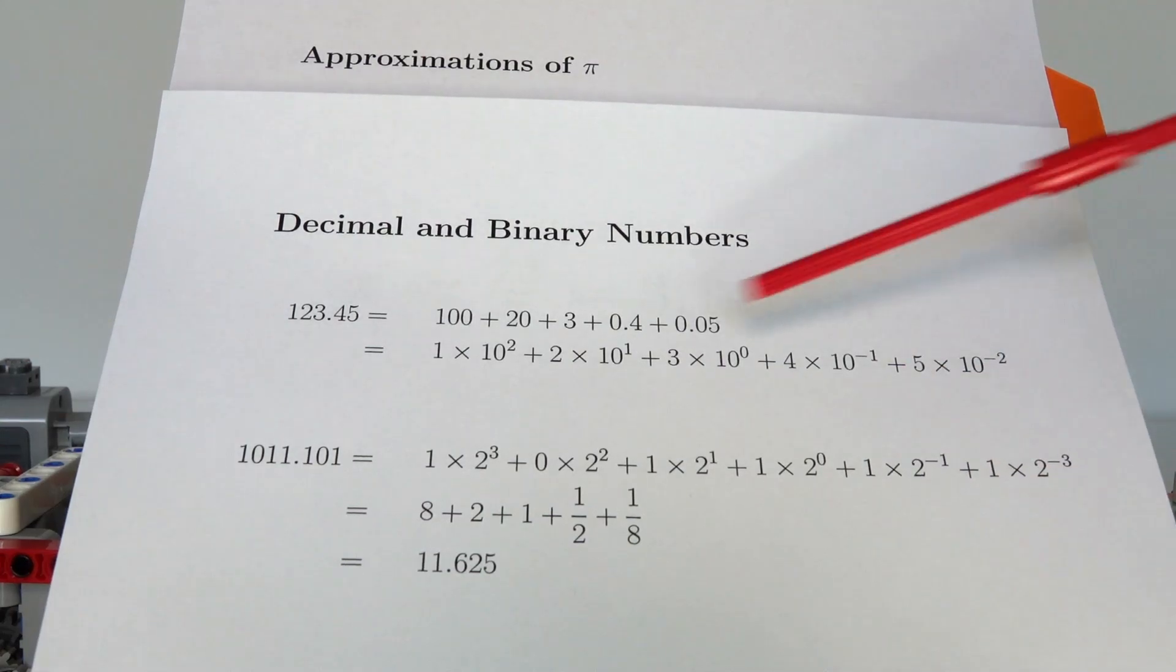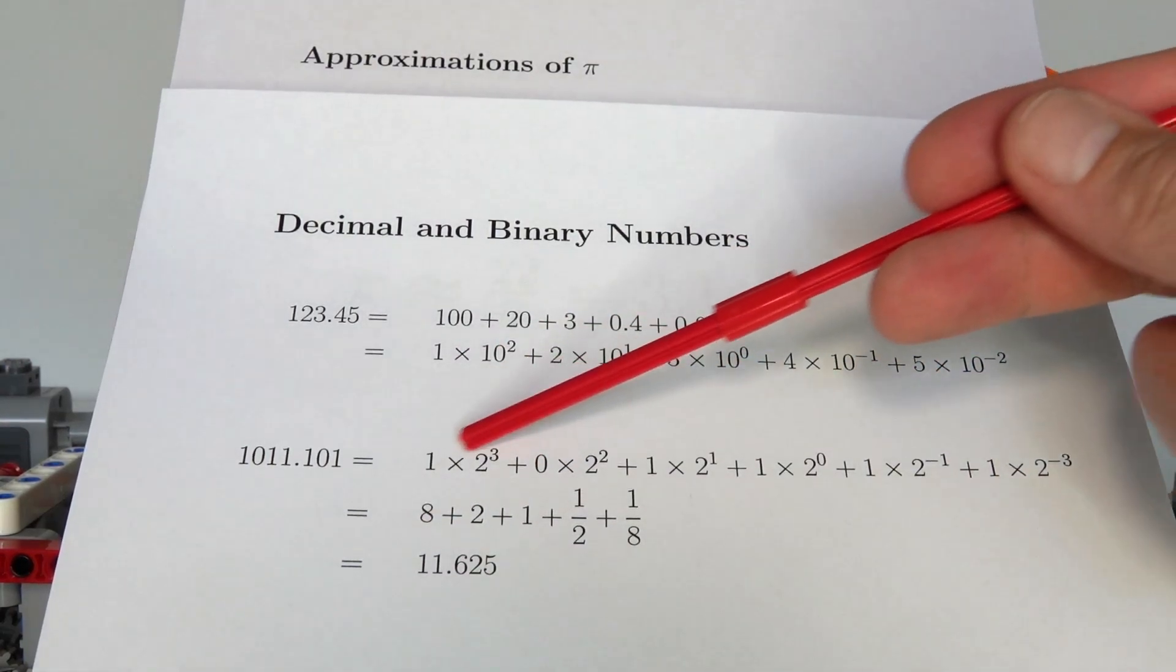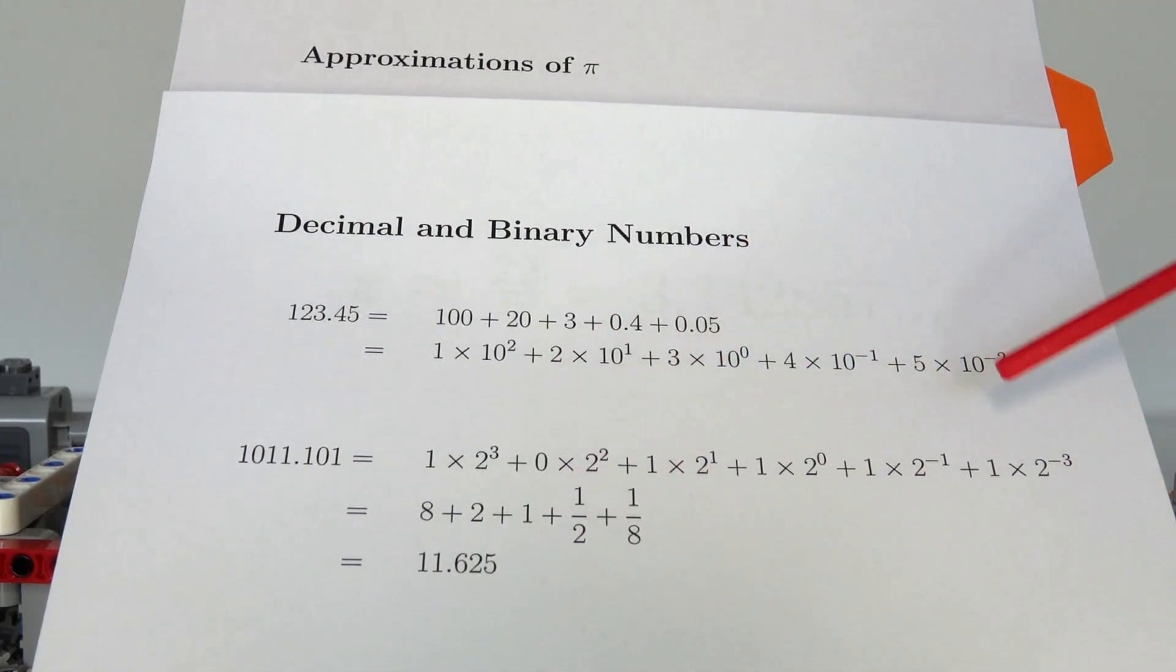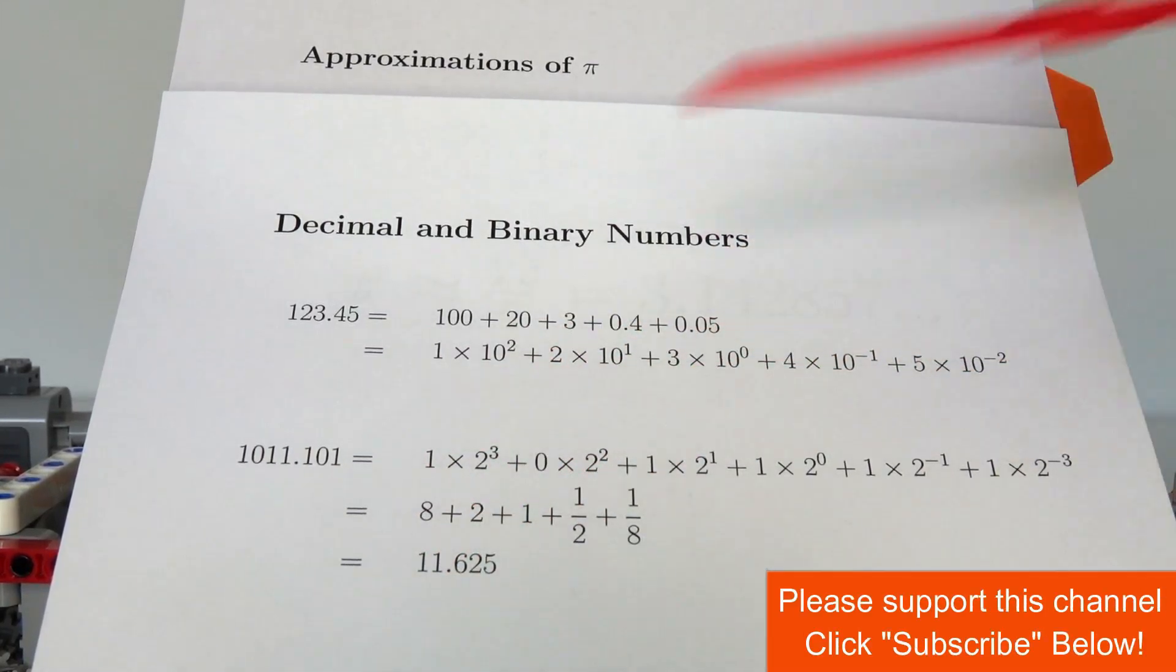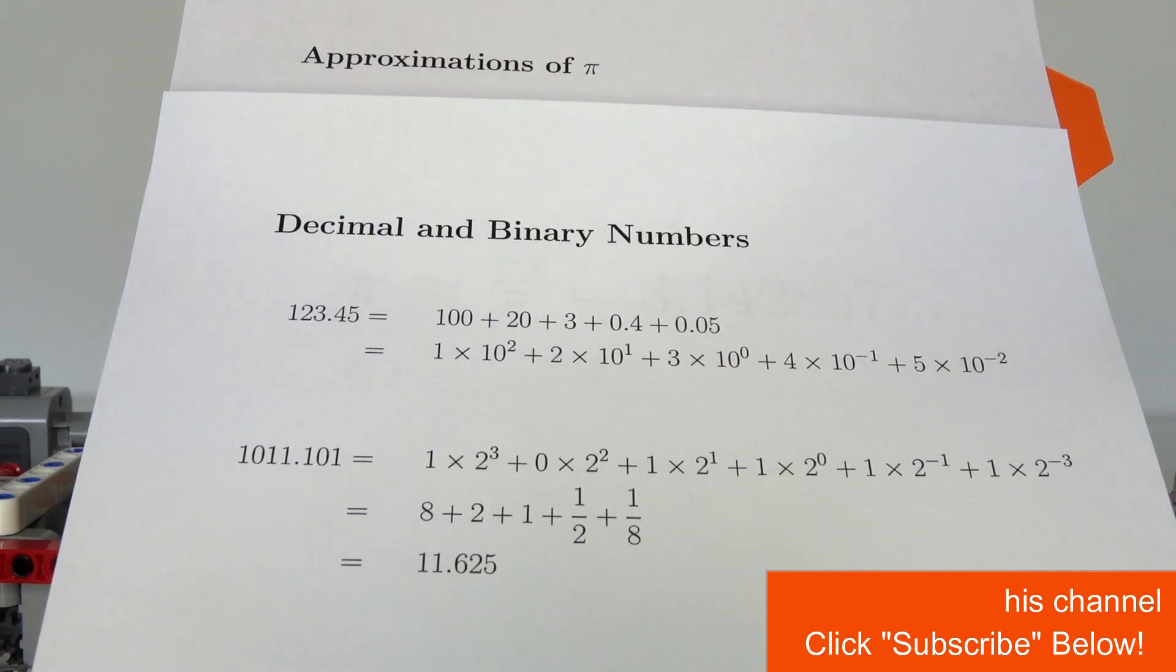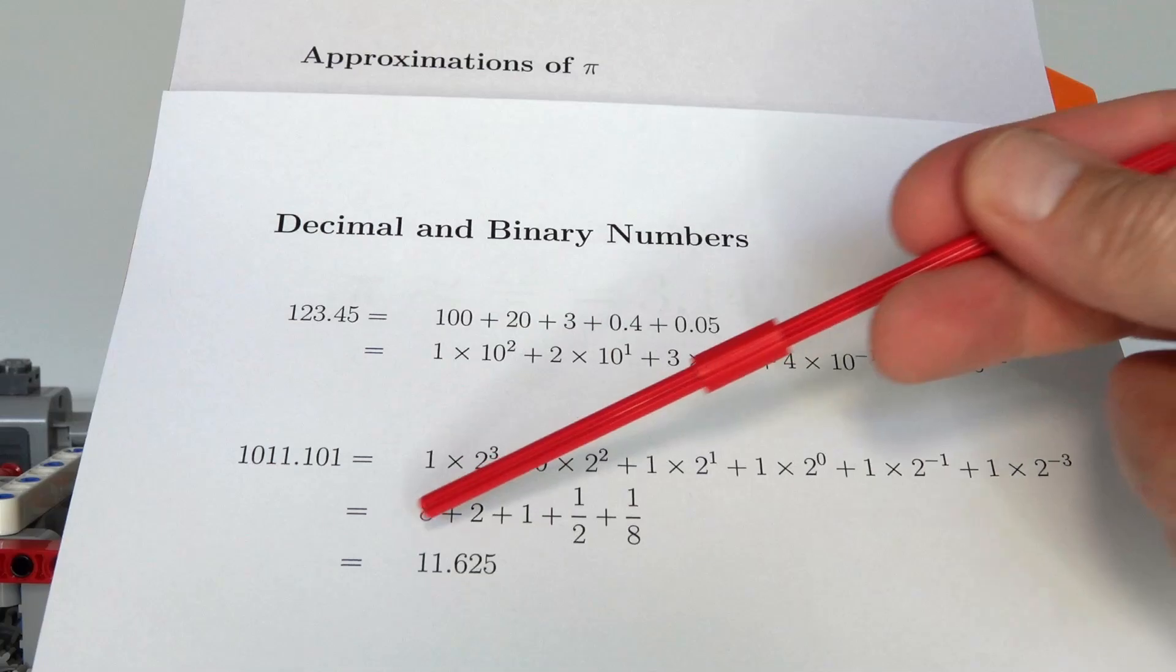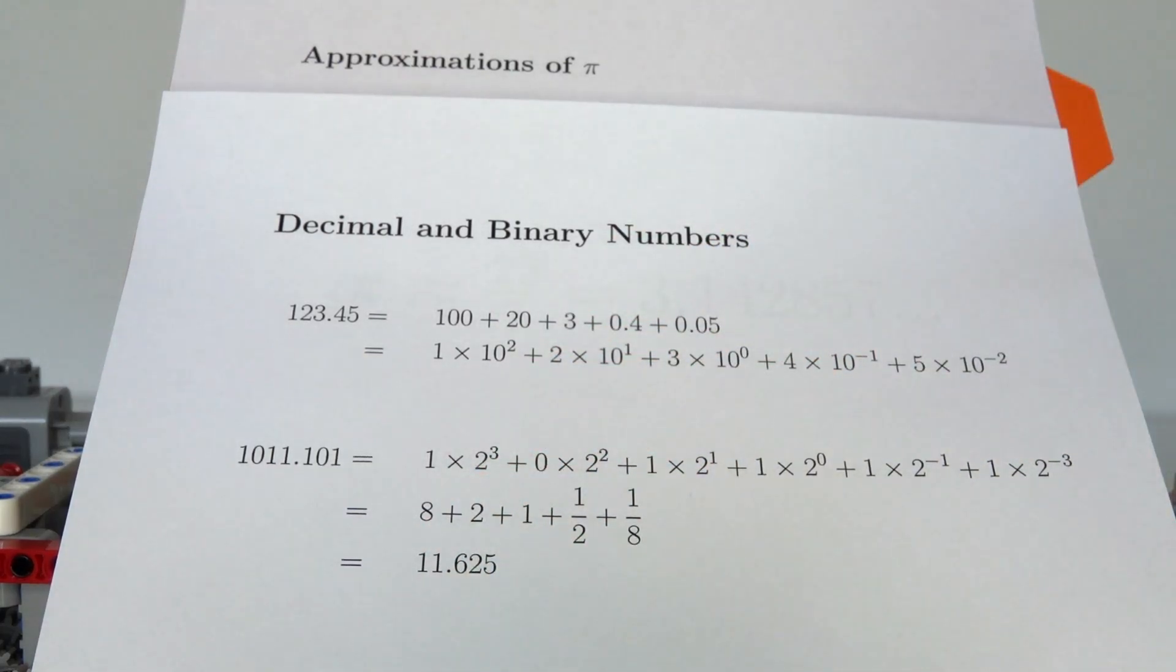If we convert that back into decimal, we've got 8 plus 2 plus 1 plus one half plus one eighth. The final number is 11.625. So the binary number and the decimal are equivalent numbers. What I'm saying is I'm going to take Pi and write it as a binary number.